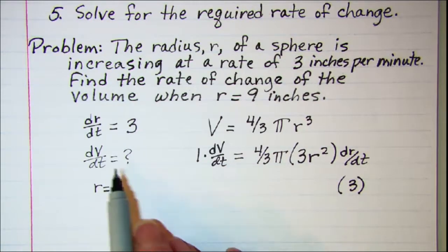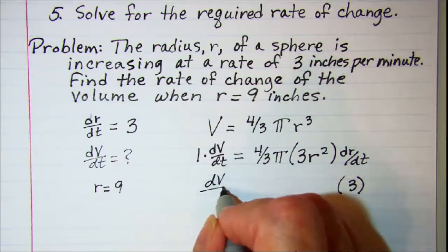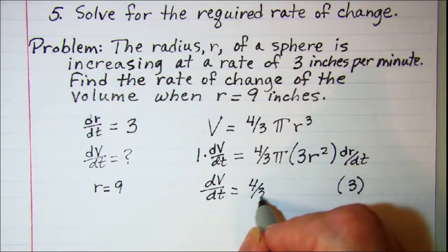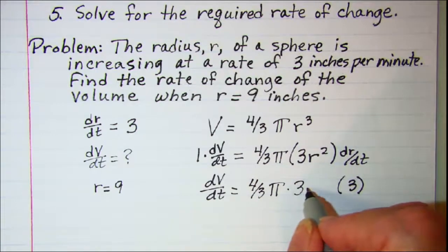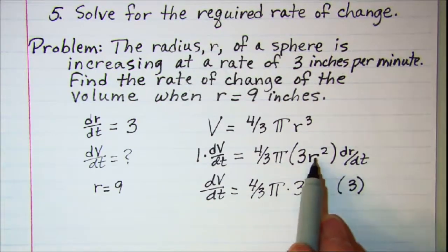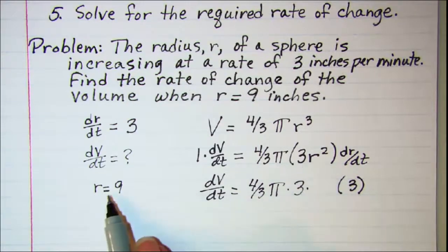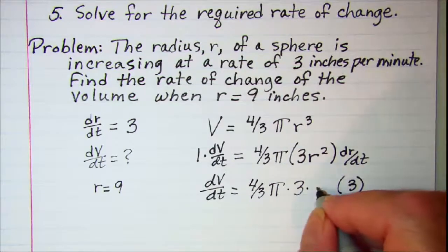And I also know I'm looking for dV/dt, so let's just keep that as the variable dV/dt. And then I have 4/3 times π times 3 times, and then r, since I have my derivative done, I can substitute this 9 in for r, so I have 9².